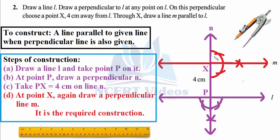In mathematics you don't draw randomly — you must write steps and state your aim before starting. We are going to construct a line parallel to a given line when a perpendicular line is also given. Points already given are marked in one color, and all construction to be done is shown in red. The compasses have a sharp needle and a pencil tip for making arcs.